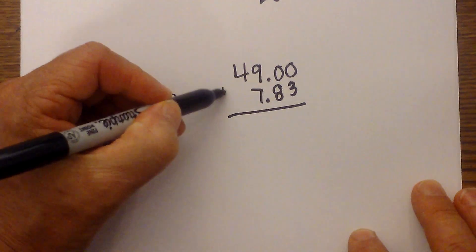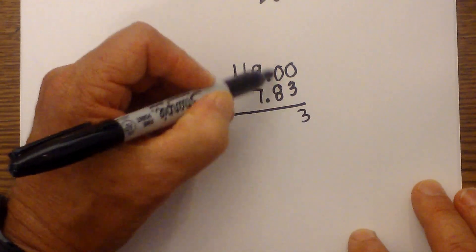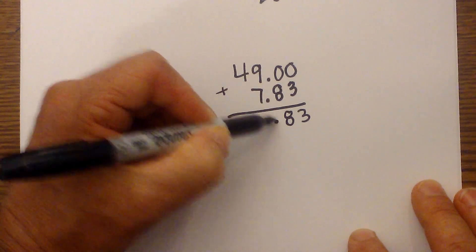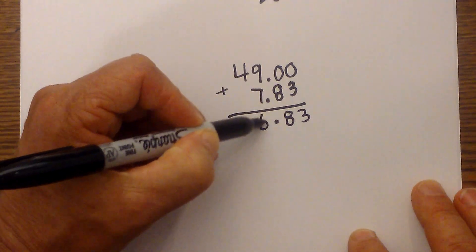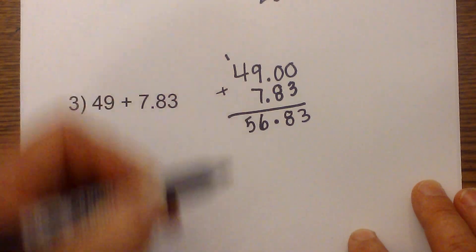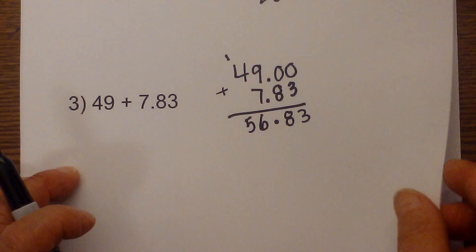Now we just add. Three plus zero is three, eight plus zero is eight, nine plus seven, bring down the decimal. Nine plus seven is sixteen, carry the one. Four plus one is five, so that is 56.83. Now let's get to a couple of subtraction problems.